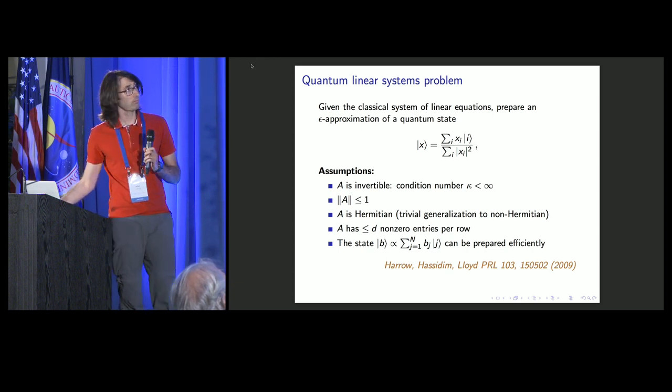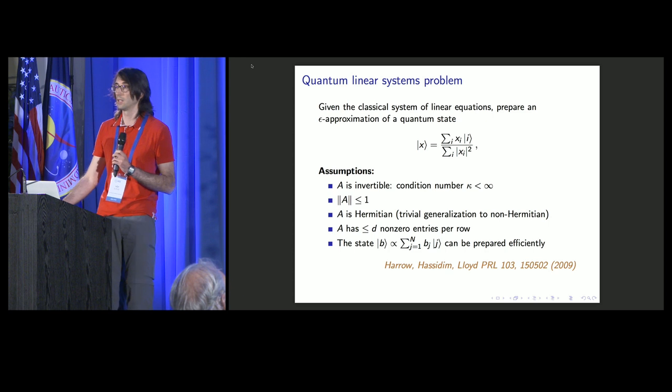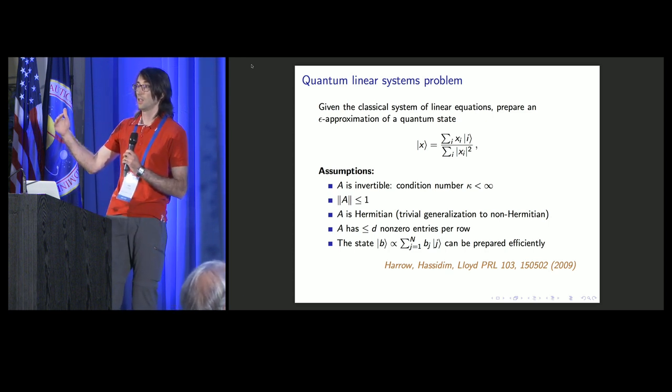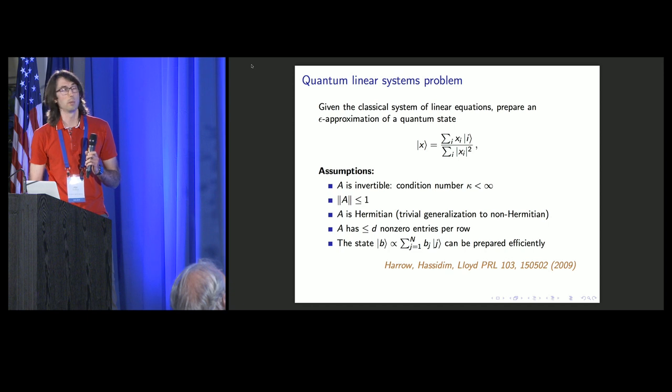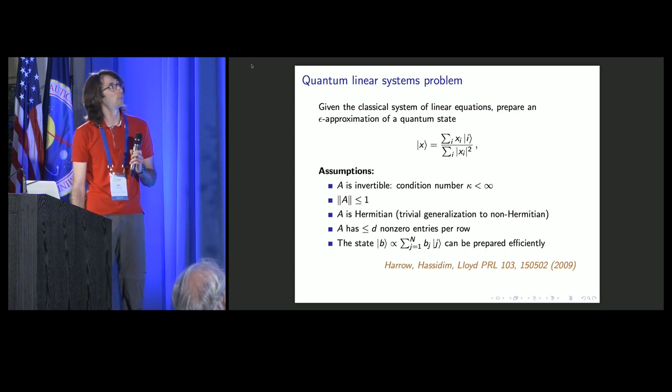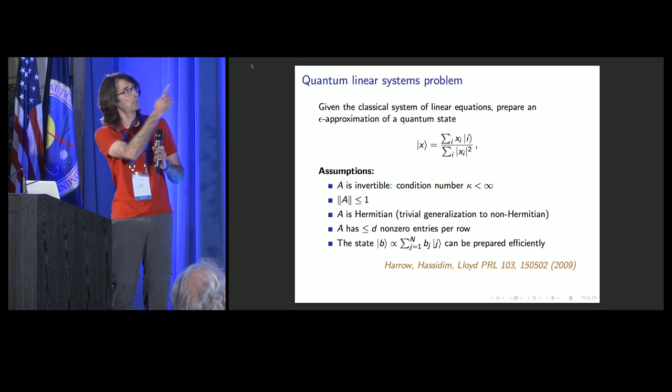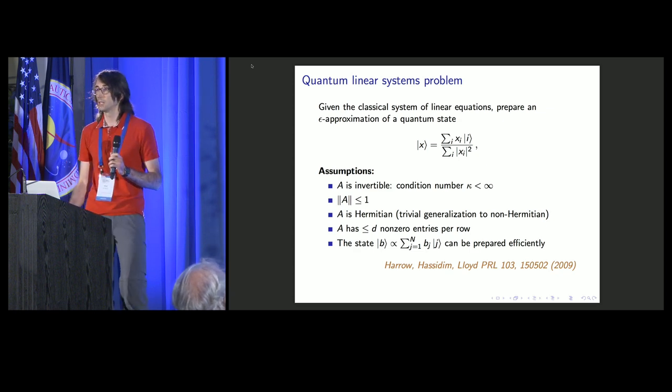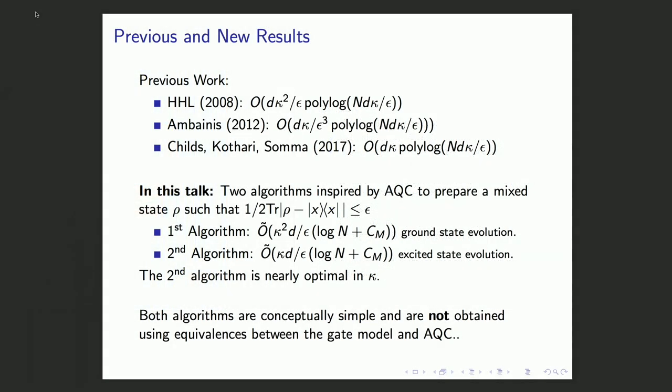These assumptions include there being a solution that A is invertible, which means the condition number is finite. The condition number is basically the ratio of the largest eigenvalue to the smallest eigenvalue. For convenience, we will assume A is bounded in norm by one and that A is Hermitian. To get the speedup, you have to assume that A is a sparse matrix and that the state B can be prepared efficiently. Under these assumptions, they have shown an algorithm that scales only polylog in the dimension n and quadratically in the condition number kappa.